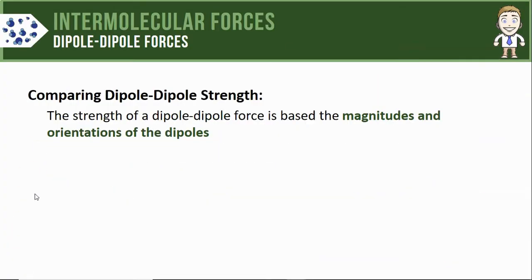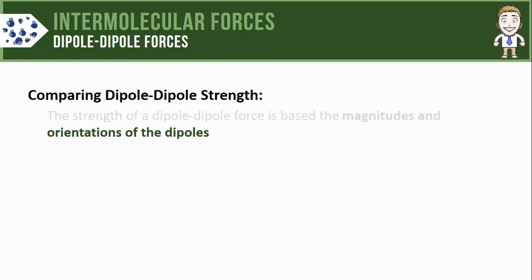Now a lot of the time what we have to do is not just look at one single dipole-dipole force but look at different types and compare them in terms of which one is stronger. To do that, the strength is based on two things: the magnitudes and the orientations of the dipoles. Let's start off and look at the orientations of the dipoles and what that will tell us.